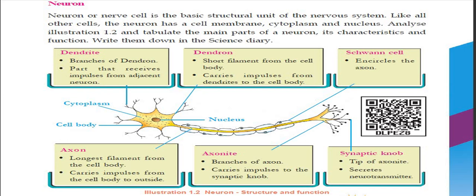Every part of our body — the neuron is the important part of our human body. Neuron, or nerve cells, is the basic structural unit of the nervous system. We are also going to talk about cell membrane, cytoplasm, and nucleus.